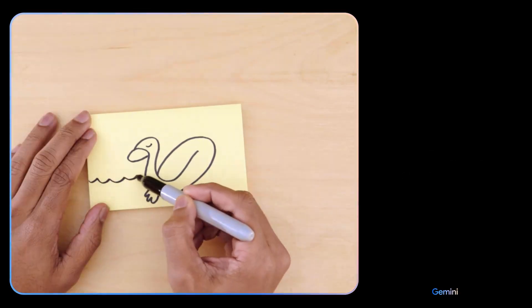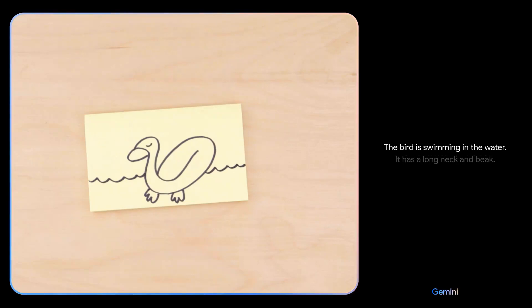Hmm. What if I add this? The bird is swimming in the water. It has a long neck and beak. It is a duck. Yes.